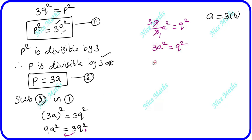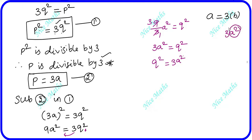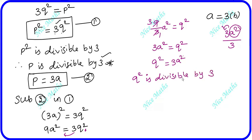Now q² is also equal to 3a², which means q² is divisible by 3. Since q² is divisible by 3 and 3 is prime, q is also divisible by 3.